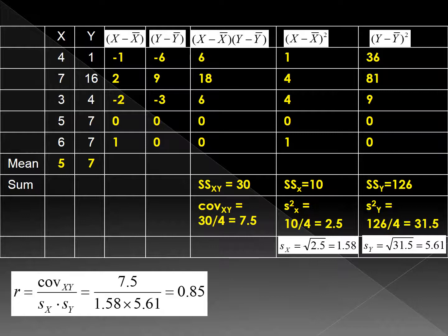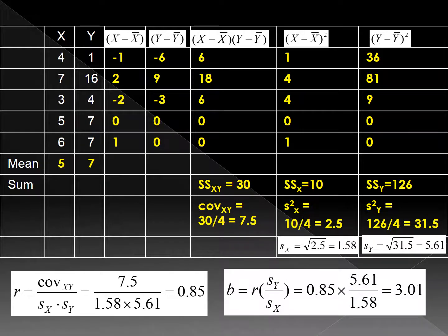Plugging the numbers into the formula, the correlation between x and y is 0.85. B equals R multiplied by the ratio of SD of y and SD of x. It is 0.85 multiplied by 5.61 divided by 1.58 — you will have 3.0. That should be the same figure you have for the previous in-class exercise.